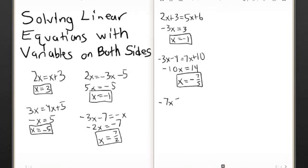Negative 7x equals 10x minus 5 plus 2x. Now we have three different sets of x here, so let's do it one at a time. The 10x moves over here and becomes negative, giving negative 17x. Then the 2x moves over, making it negative 19x, and equals negative 5.